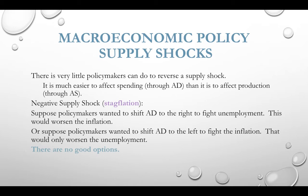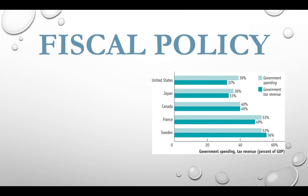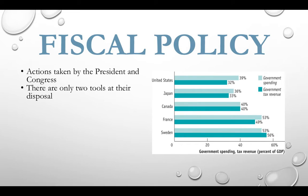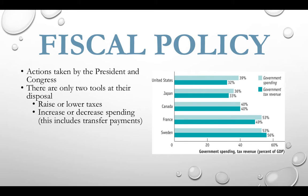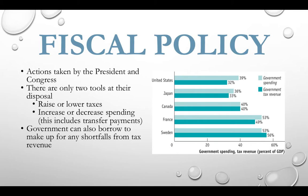When we have a negative supply shock — a decrease in aggregate supply — there are not really many good options for government. So let's look at fiscal policy. Fiscal policy consists of actions taken by the president and Congress, and there are two tools at their disposal: they can raise or lower taxes, and they can increase or decrease government spending, including transfer payments. They can also borrow to make up any shortfalls from tax revenue, but this isn't really part of fiscal policy. If government spends and lowers taxes, the budget will be in deficit and increase the debt, but they can borrow to make this up if necessary.